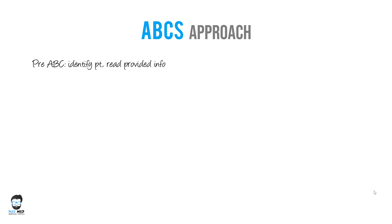Now, the crux of today's talk is the ABCs approach. For any x-ray you're trying to read — especially in orthopedics — this approach is very useful. Before applying it, you should first identify the patient, which is called the pre-ABC step. Read the provided information, as it is not uncommon to see an x-ray done for the wrong patient or mislabeled. So first, identify which patient the x-ray belongs to.